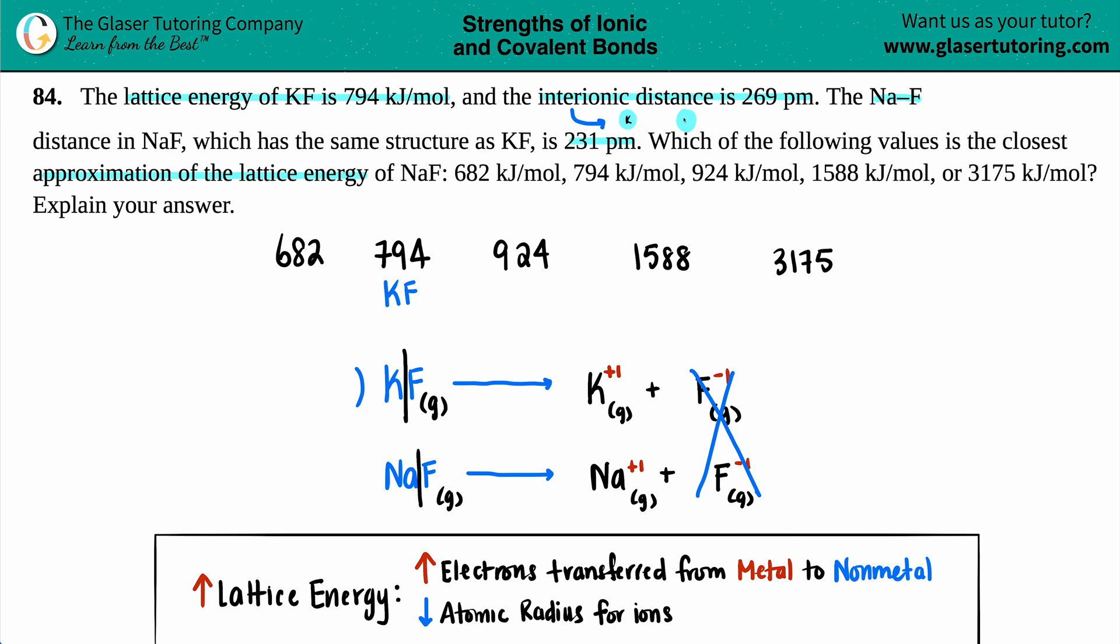So if I have my ion, maybe this is potassium and this is fluorine, they're not drawn to scale, but the distance between the two of them would be 269 picometers.